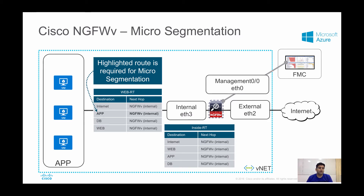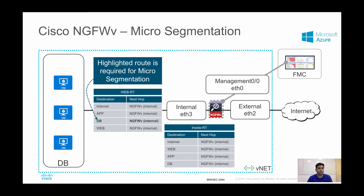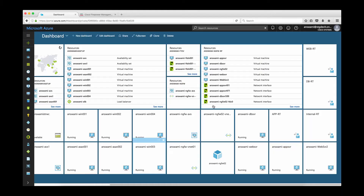This is the second example where we have the app subnet talking to another workload within the app subnet — we can add a route for that. These highlighted routes are really important if you want to enable micro segmentation. The same concept applies to the database subnet. You can look at the effective routes in the UDR or at the interface level, and if the route for the same subnet is there with next hop as NGFW it will work. The same rule applies for ASA as well. I'll now go to portal.azure.com to show the existing setup and demonstrate how micro segmentation is working.